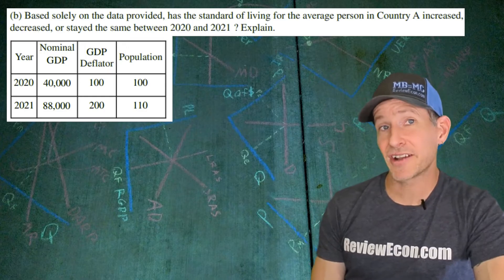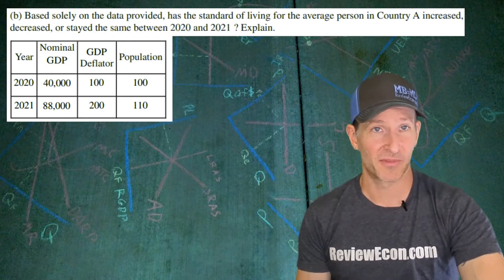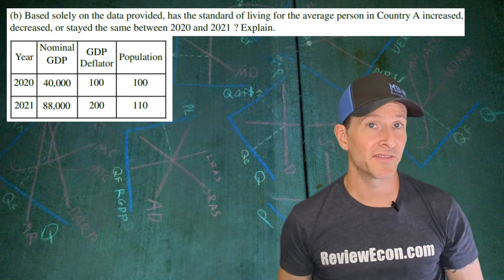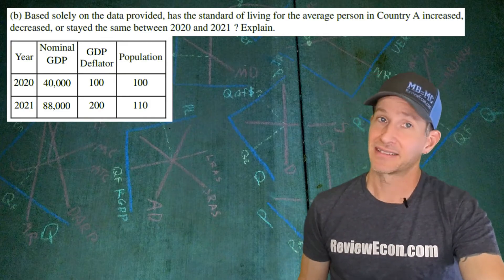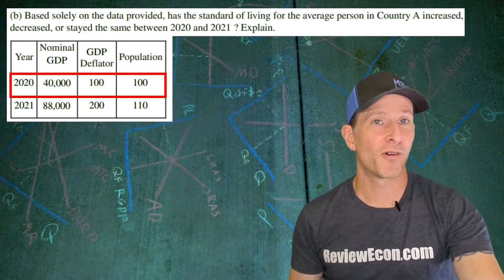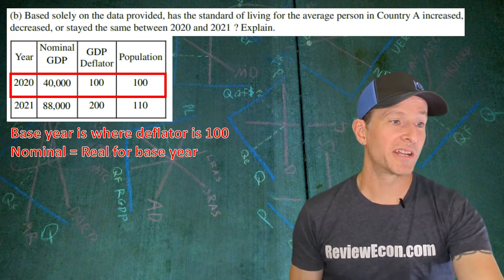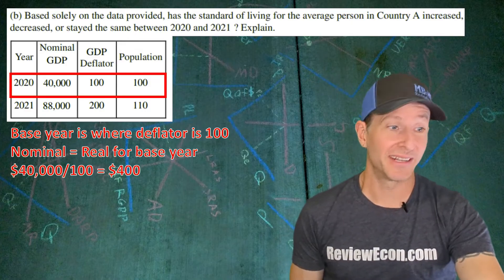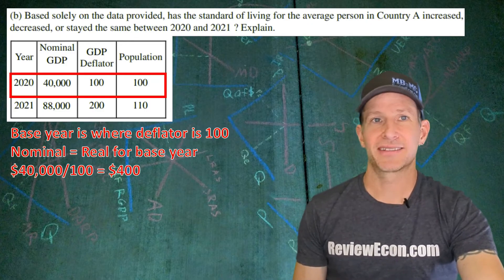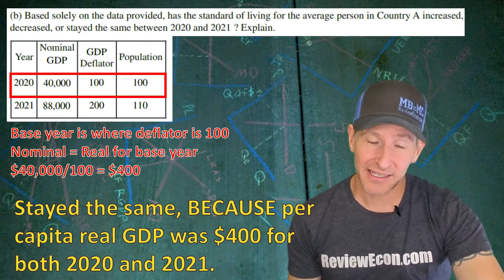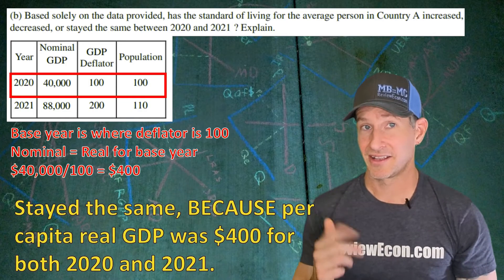For part B, we need to explain if the standard of living in country A has increased, decreased, or stayed the same from 2020 to 2021 based on the numbers in this table. The best way to determine standard of living is per capita real GDP. We've already calculated it for 2021, so let's calculate it for 2020. We have to remember that nominal and real are the same thing in the base year. So per capita real GDP is the $40,000 of real GDP divided by the 100 people that lived there in 2020, which equals $400. That tells us the standard of living stayed the same because per capita real GDP was $400 for both 2020 and 2021.